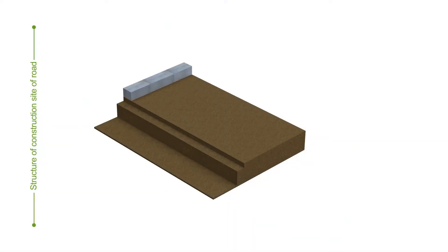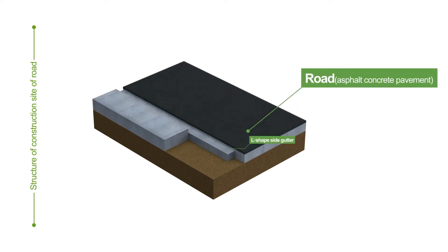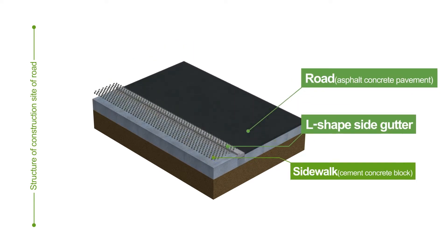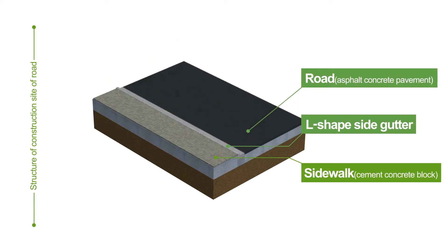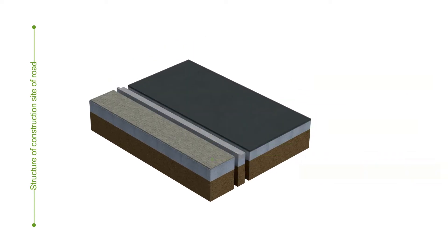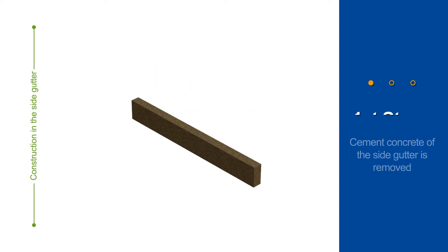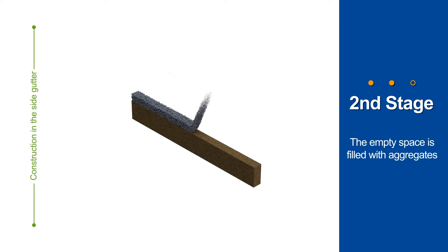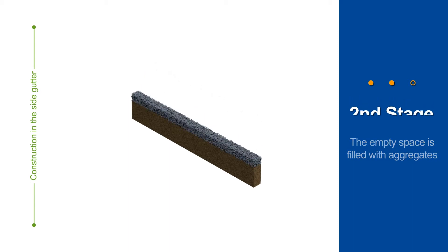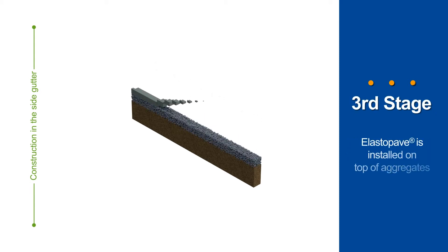This is the most common road and sidewalk seen in our cities. To improve the side gutter of the road, firstly the cement concrete is removed. Next, the empty space is filled with aggregates. Finally, ElastoPave is installed on top of the aggregates.